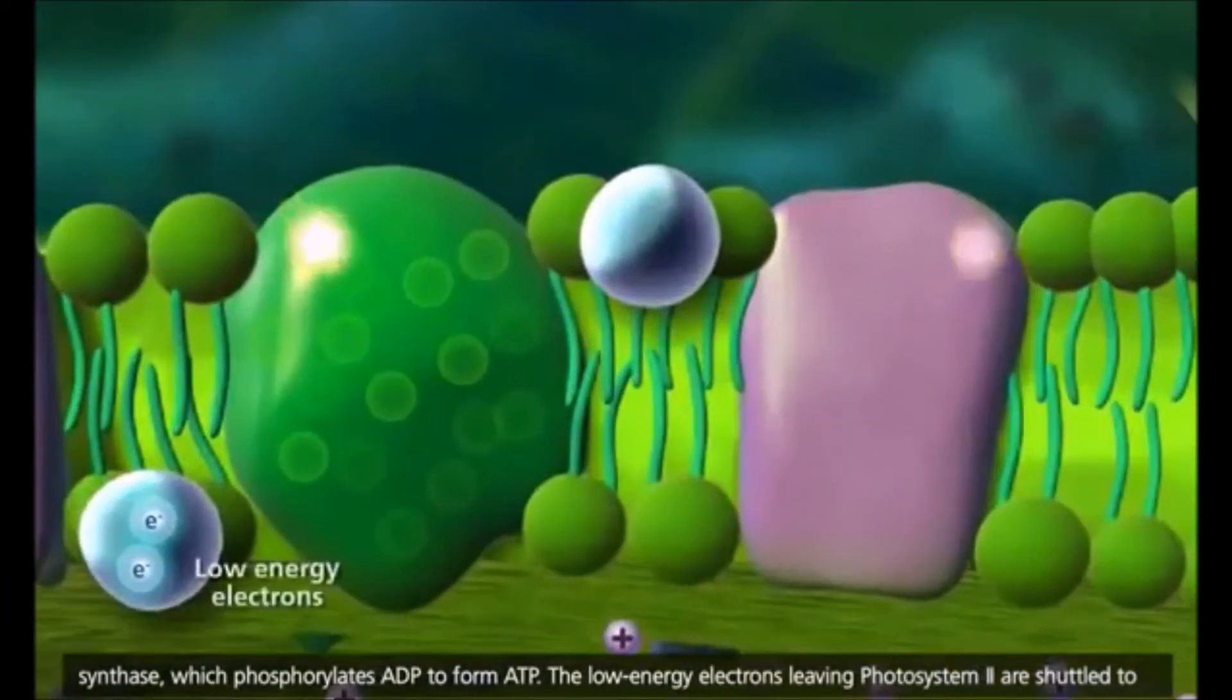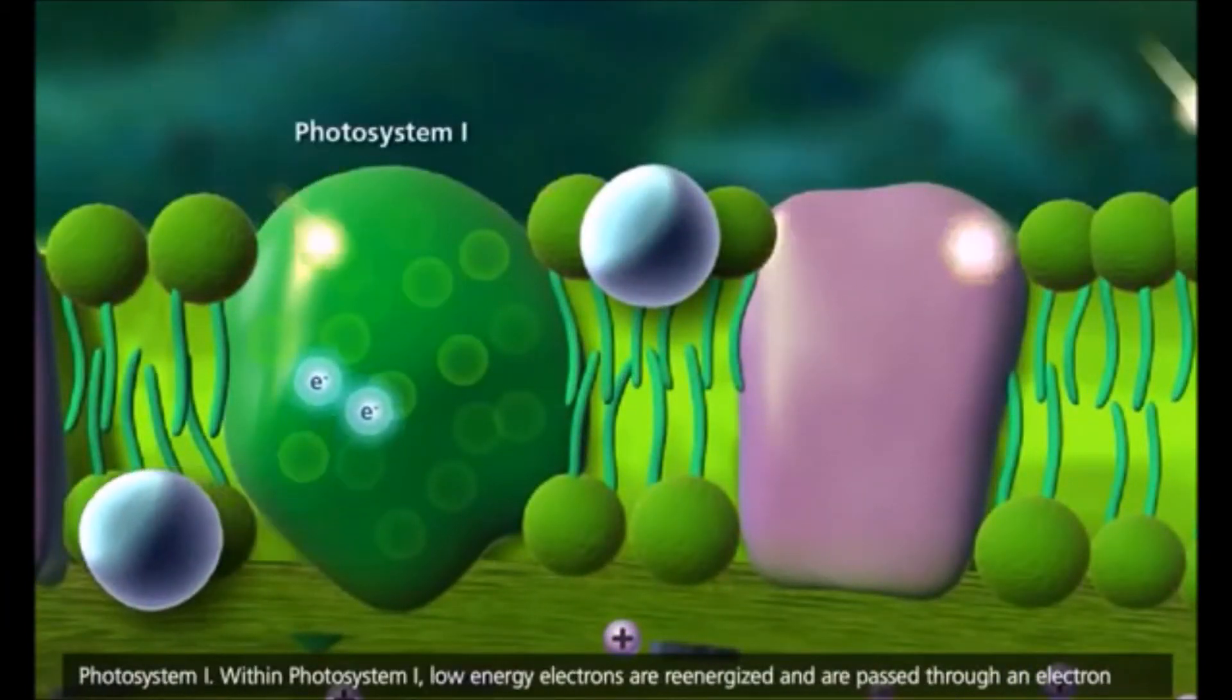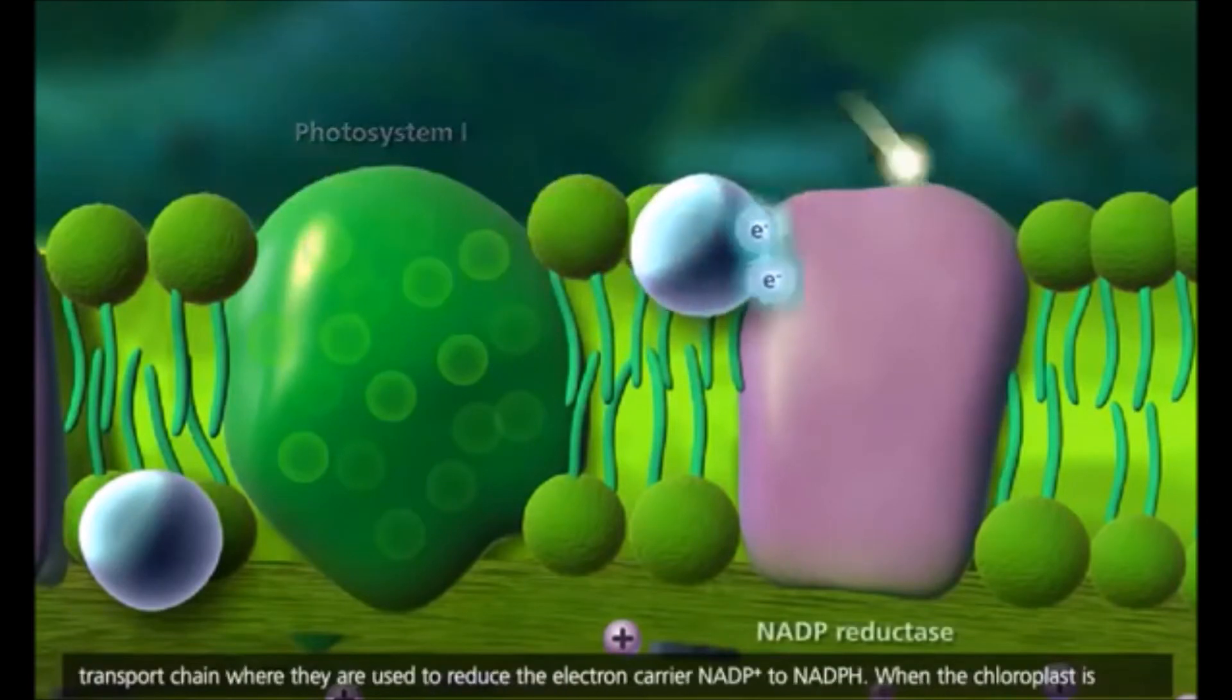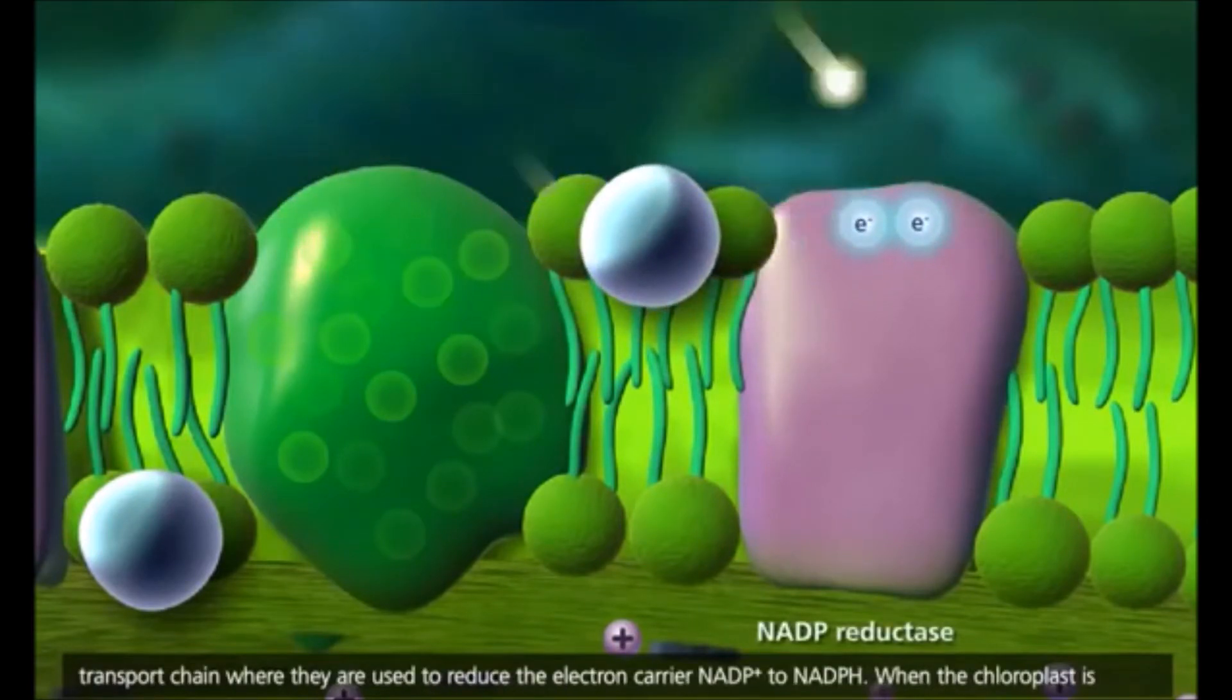The low-energy electrons leaving photosystem-2 are shuttled to photosystem-1. Within photosystem-1, low-energy electrons are re-energized and are passed through an electron transport chain where they are used to reduce the electron carrier NADP+ to NADPH.